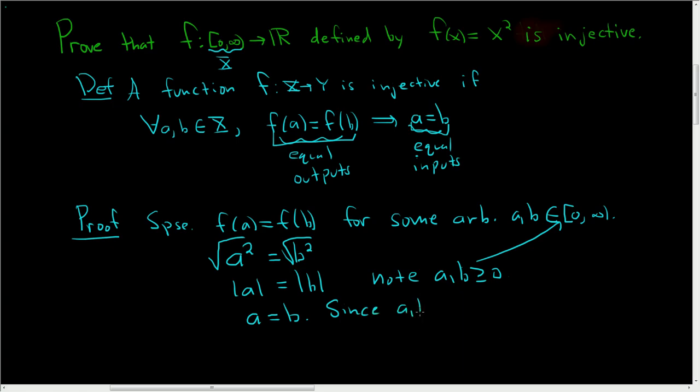Since a and b were arbitrary, this holds for all a, b in our domain. Thus, f is injective. And that's the proof.